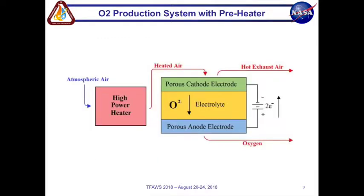Here we have an oxygen production system with a pre-heater. An example of an oxygen production system is a SOE or solid oxide electrolyzer. Going through the diagram you have atmospheric air going through the high powered heater. The purpose of the heater is to heat up air to operational temperature.